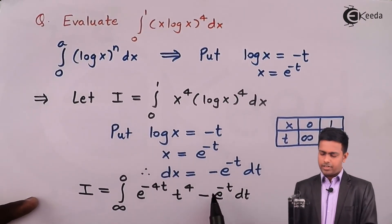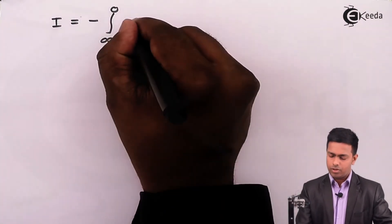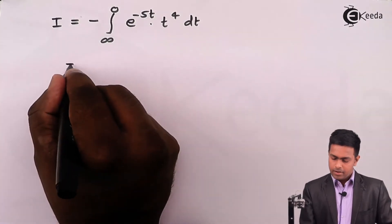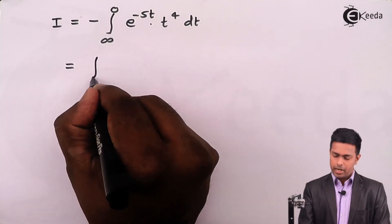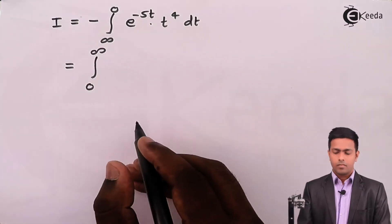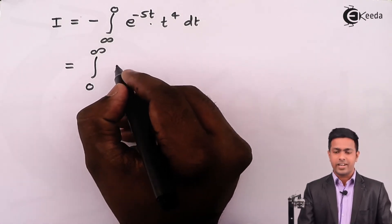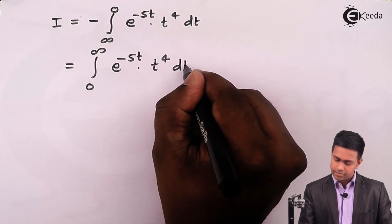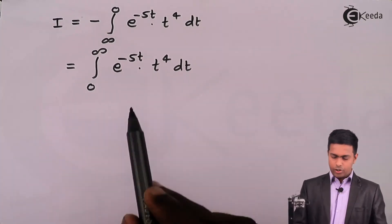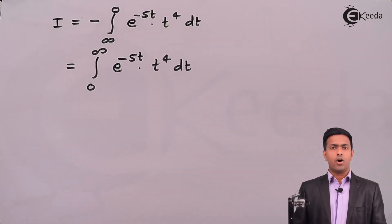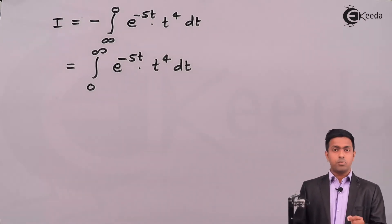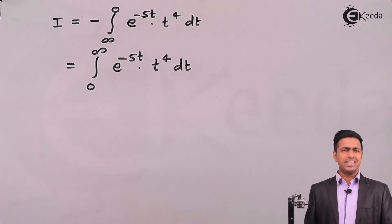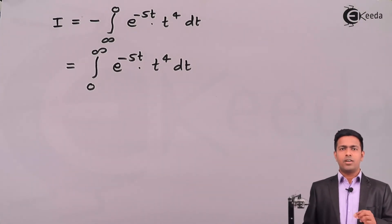After interchanging limits, I = ∫₀^∞ e^(-5t) · t⁴ dt. This has been converted close to the gamma function definition, but we need the power of e to be -t, not -5t. So we need one more substitution to bring it exactly into the standard gamma form.